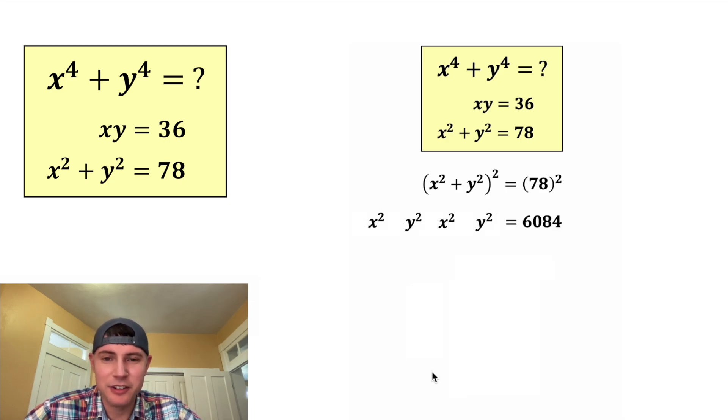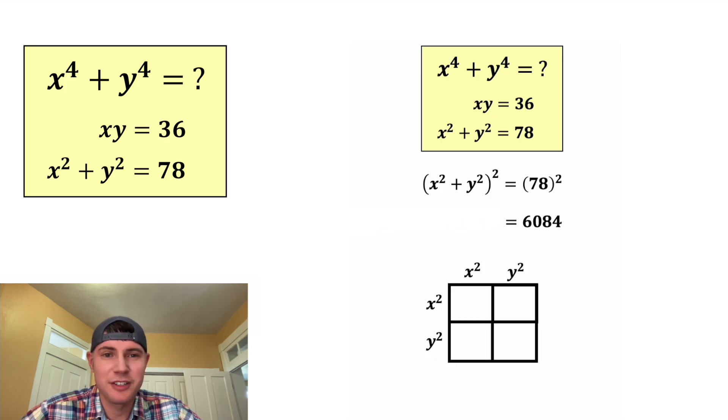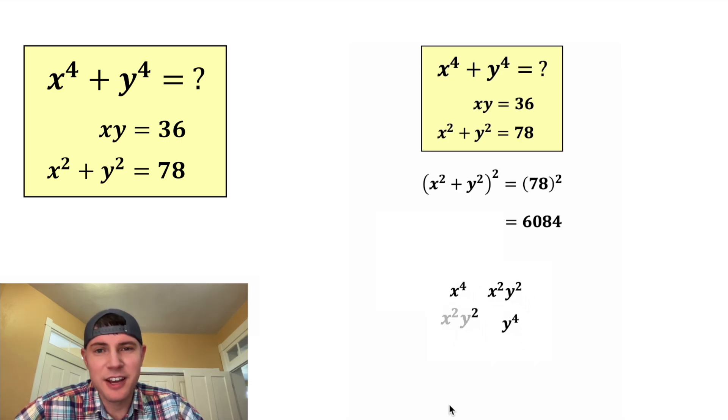On the left-hand side, you can multiply this out. Let's use one of these squares. x squared times x squared is equal to x to the fourth. x squared times y squared is equal to x squared y squared. And then we have another x squared times y squared, so that'll be x squared y squared. And then we have y squared times y squared, which is equal to y to the fourth. And these insides are what we would get if we were to multiply it out.